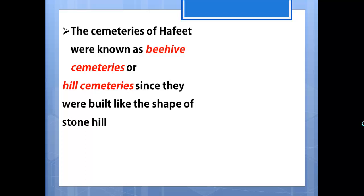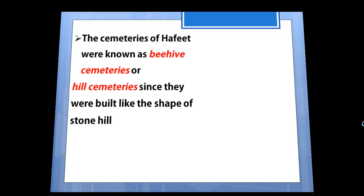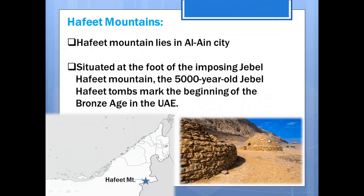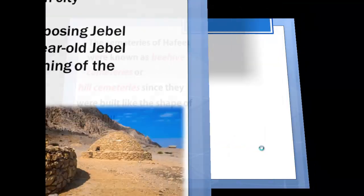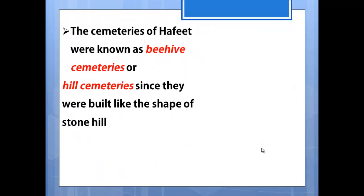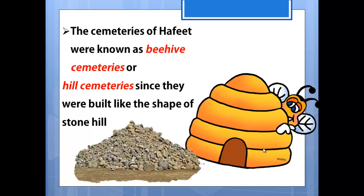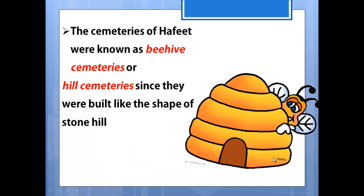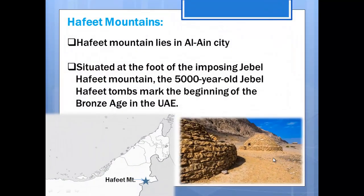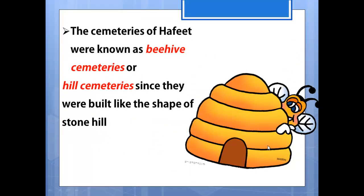Now we are going to look into the particularities of the tombs found at Hafeet. The tombs of the Hafeet Mountains were also known as beehive tombs or hill tombs, since they were built in the shape of a stone hill. Just like how a beehive looks, the tombs of Hafeet Mountains are almost the same shape — that is the reason why they are known as beehive tombs.